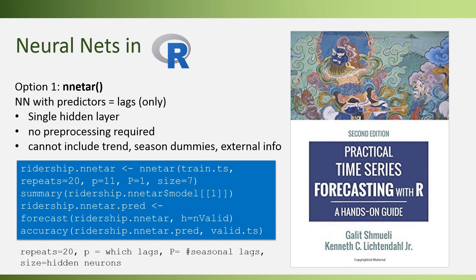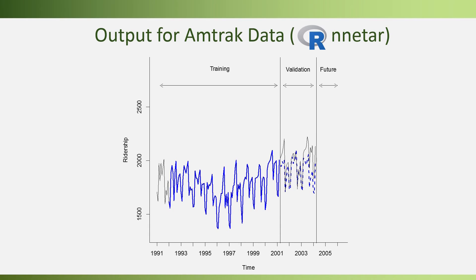Here's the output from nNetAR. In the validation period, the neural net doesn't properly capture the peaks and tends to over-forecast. This is just one setting and we can try other options. If we don't specify the argument p, nNetAR will search for the best value by fitting an autoregressive model — but we must be aware of overfitting when doing that.